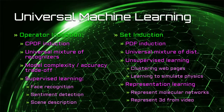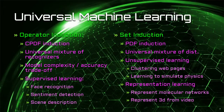Universal Machine Learning is well captured by Solomonov's Universal Induction Theory. Solomonov introduced two kinds of induction relevant to this study: Operator Induction and Set Induction. Operator Induction is Conditional Probability Density Function Induction and it is a universal mixture of recognizers. Like MML, it presents a model complexity accuracy trade-off. Operator Induction corresponds to well-known supervised machine learning problems, some examples of which are face recognition, sentiment detection, and scene description. Set Induction likewise corresponds to unsupervised learning and it is essentially PDF induction. It also is a universal mixture of distributions. Both forms of induction are convergent and complete, just like the more well-known sequence induction scheme. Some examples of set induction are unsupervised learning, clustering web pages, learning to simulate physical problems, and representation learning, such as representing molecular networks and representing 3D scenes from video.